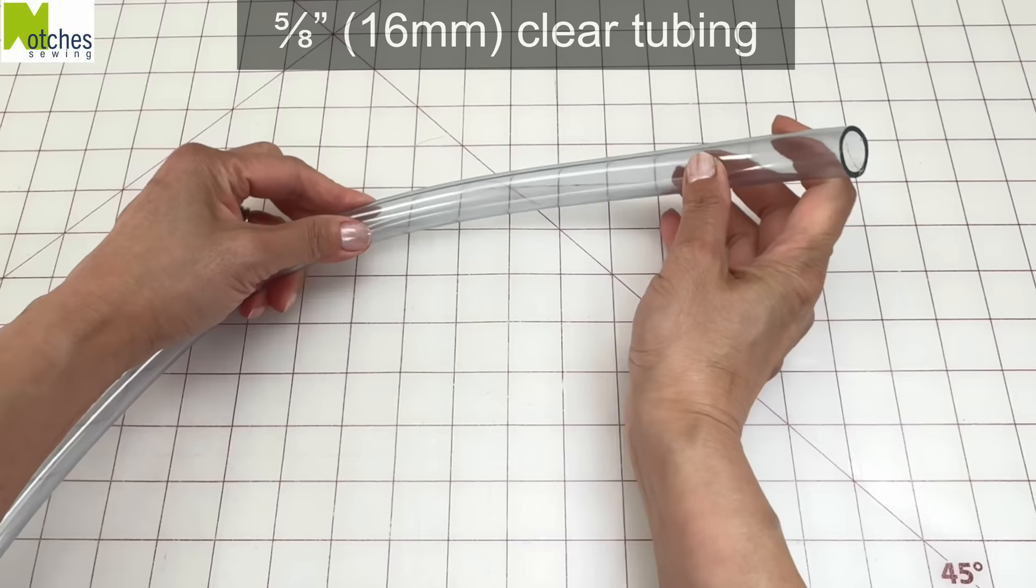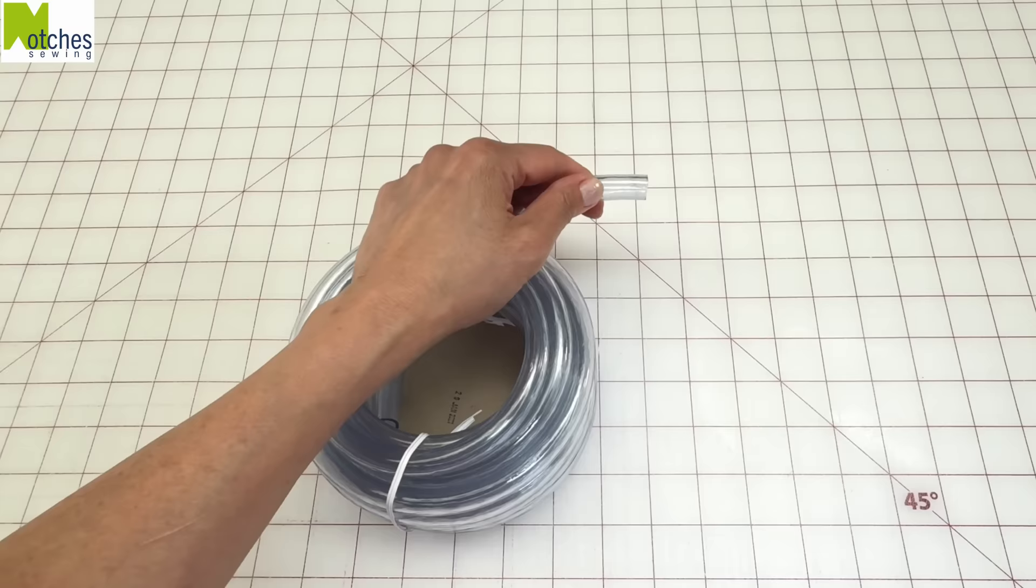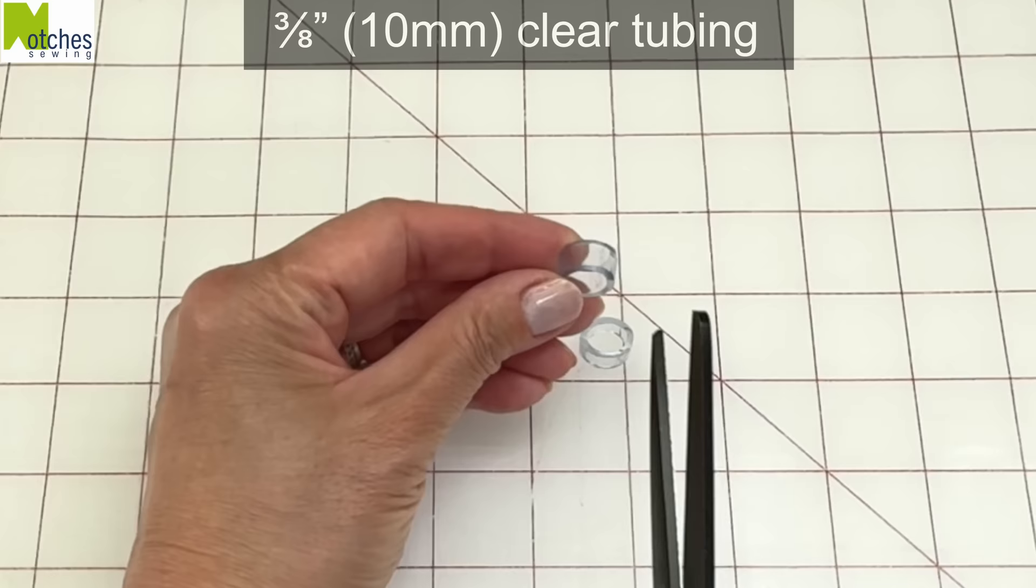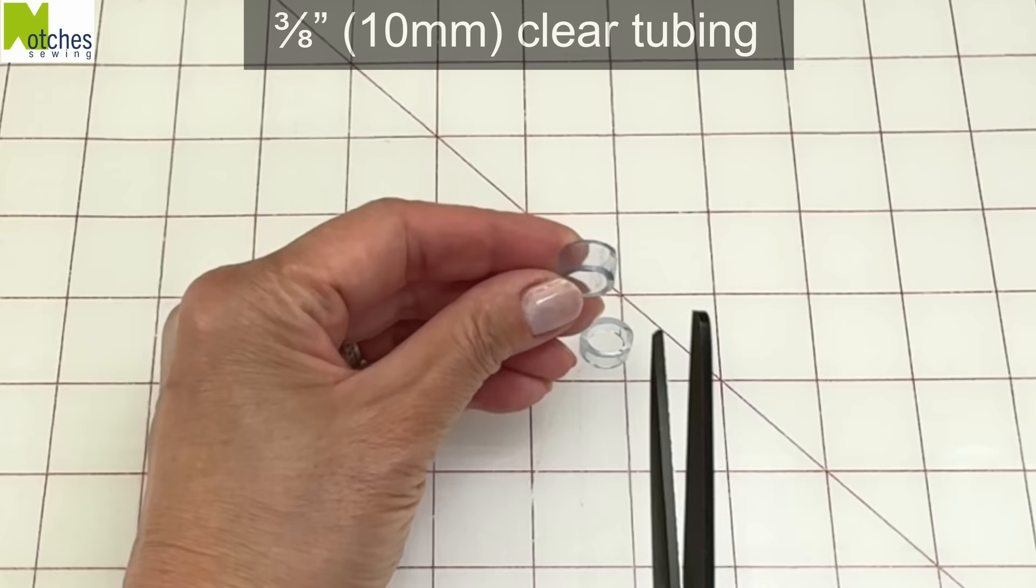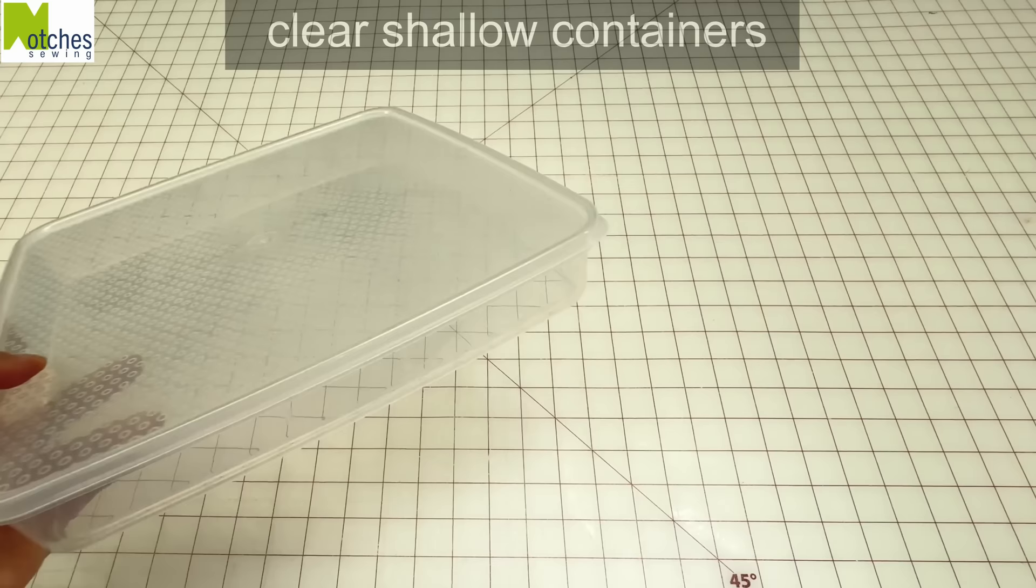You can use clear tubing to store your bobbins. Just cut a short length, then cut away about a quarter of an inch from the center. Place the bobbins inside about an inch apart. Cut small pieces of a skinnier hose to use as bobbin clips. This will help keep the threads from unraveling. This will also work for small spools of thread.